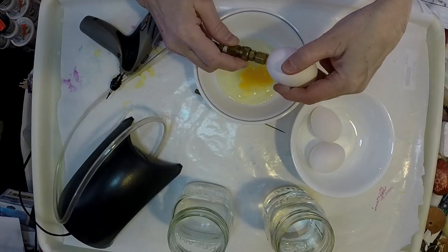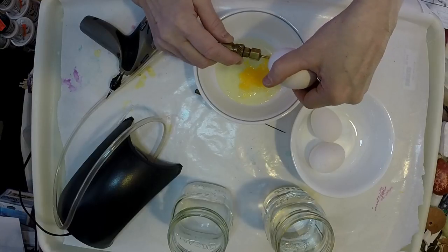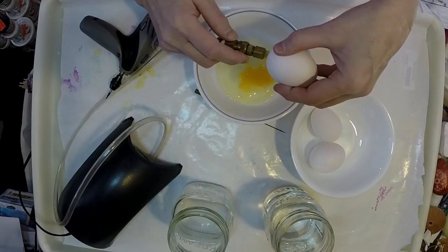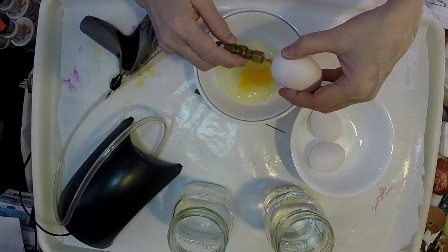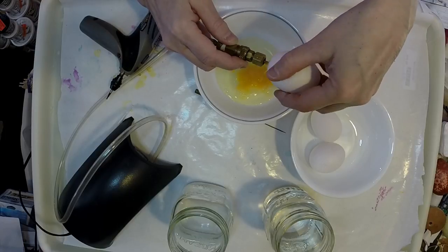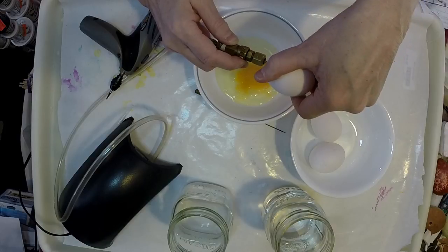Now you can use this process with ostrich eggs, rhea eggs, goose eggs, any type of egg. I would use a larger ball burr for the larger eggs because the yolk and everything is much thicker and harder, and it would just take a long time to get them out of those eggs. But I didn't want to have a really large hole.